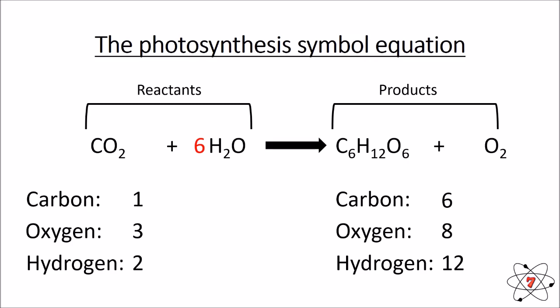I place a number six in front of H₂O, giving me six molecules of water: six times two hydrogen atoms = twelve hydrogen atoms, and six times one oxygen atom = six oxygen atoms in water. Adding the two oxygen atoms in CO₂ gives eight oxygen atoms total. So hydrogen and oxygen are now balanced on the reactant side — but carbon is not yet balanced.